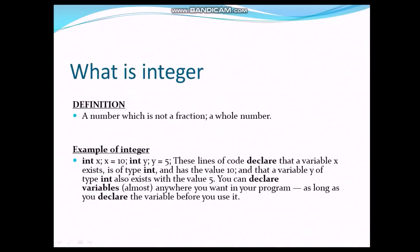What is Integer? A number which is not a fraction — a whole number. Example of Integer: integer x, x is equal to 10; integer y, y is equal to 5. This line of code declares that a variable x exists of type integer and has the value 10, and the variable y of integer also exists with the value 5. You can declare the variable almost anywhere you want in your program, as long as you declare the variable before you use it.